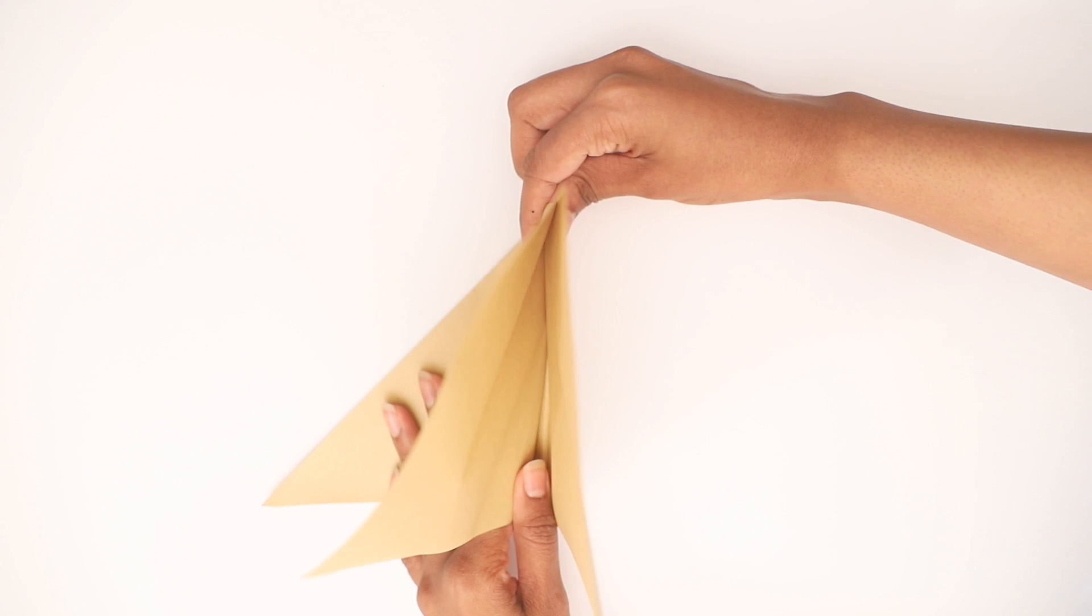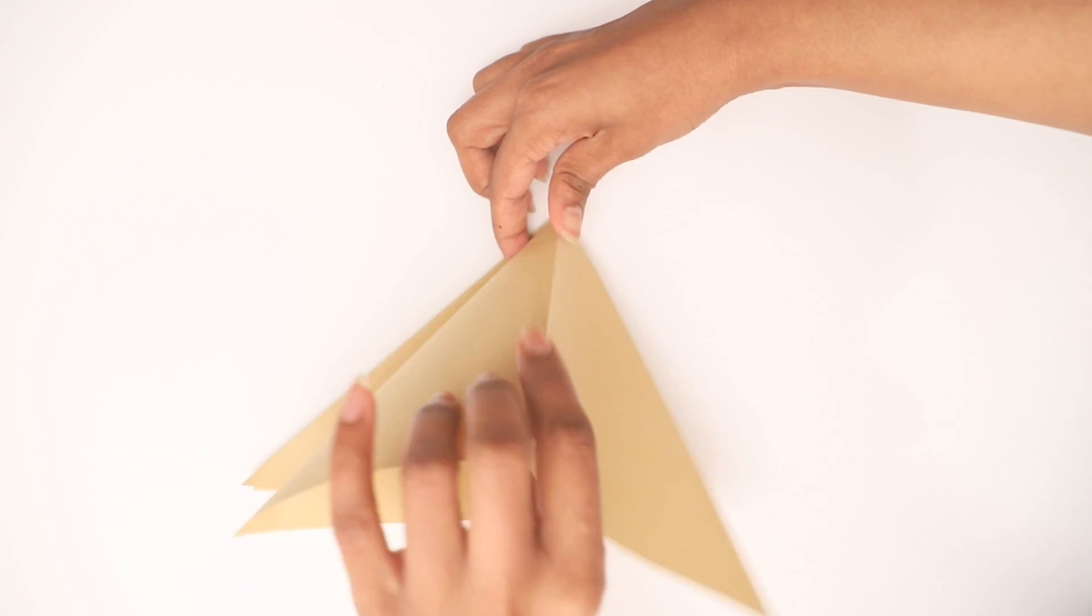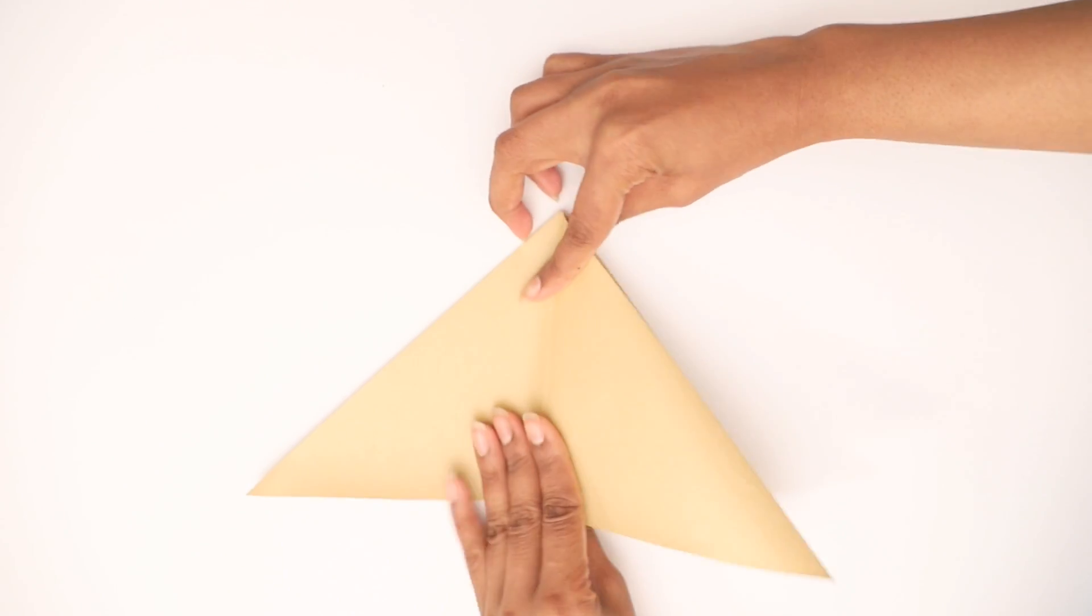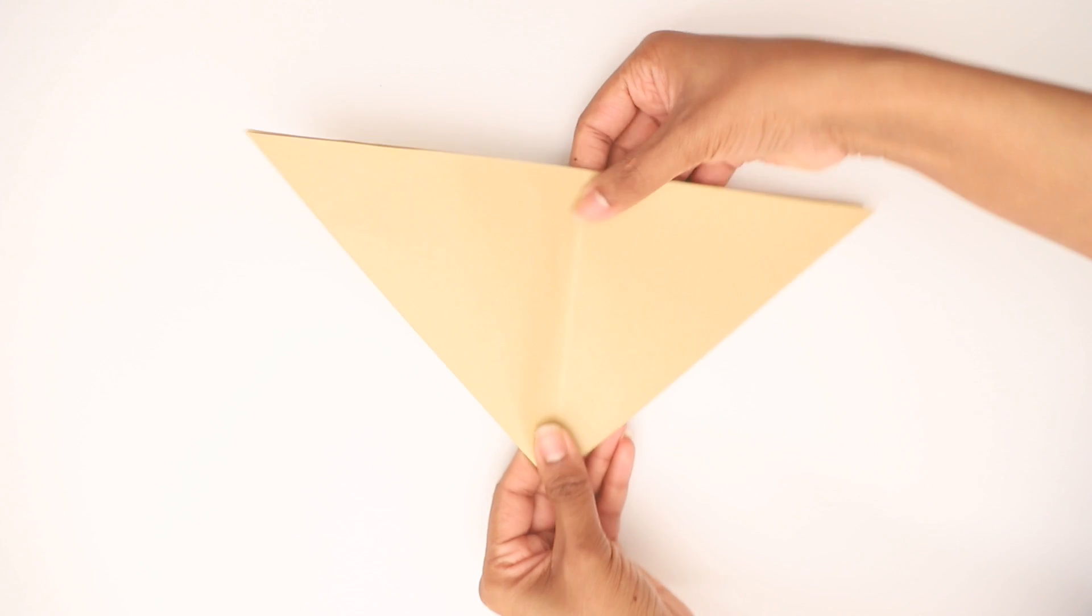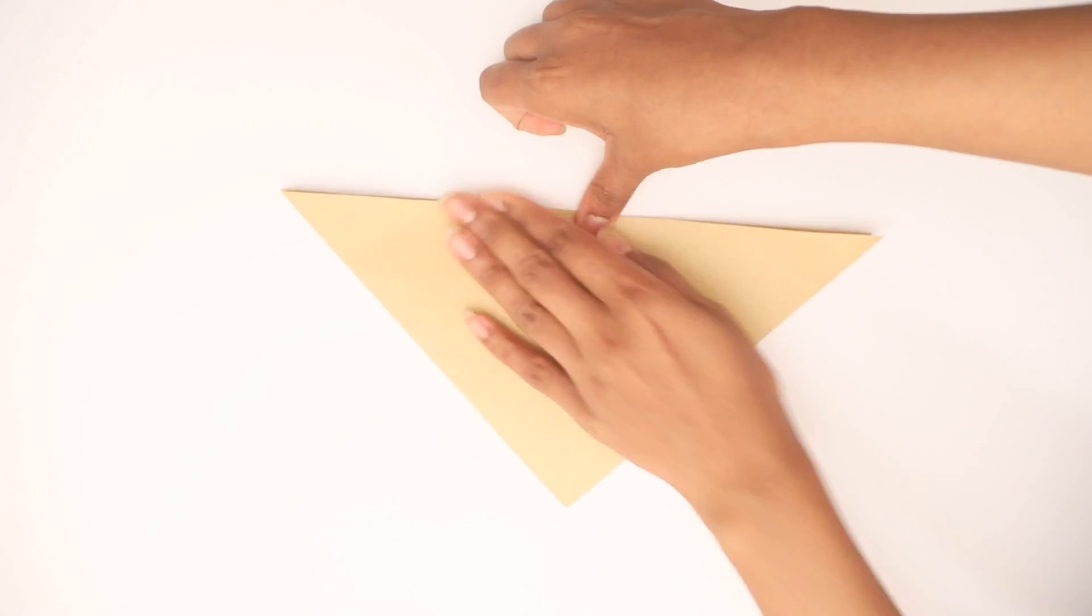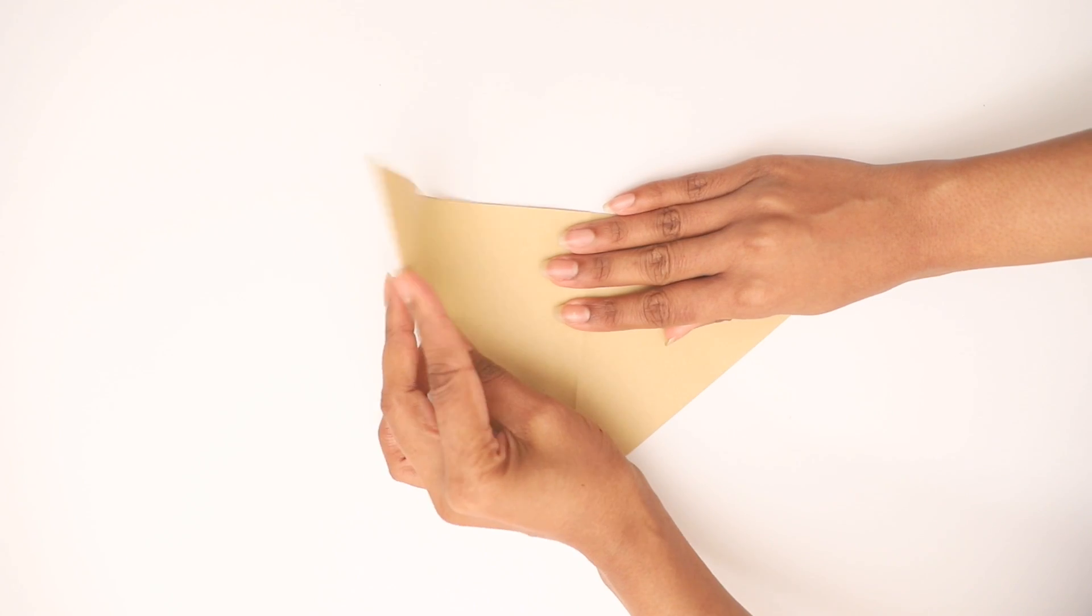the next step is to fold the sheet in half. You can use the creases that you have previously made as a guide. Then, you're going to tuck in the diagonal folds inwards on the left and right, so you're left with a triangular shape. This triangular shape should contain a total of four sexy little flaps. Alright, so we're almost done.